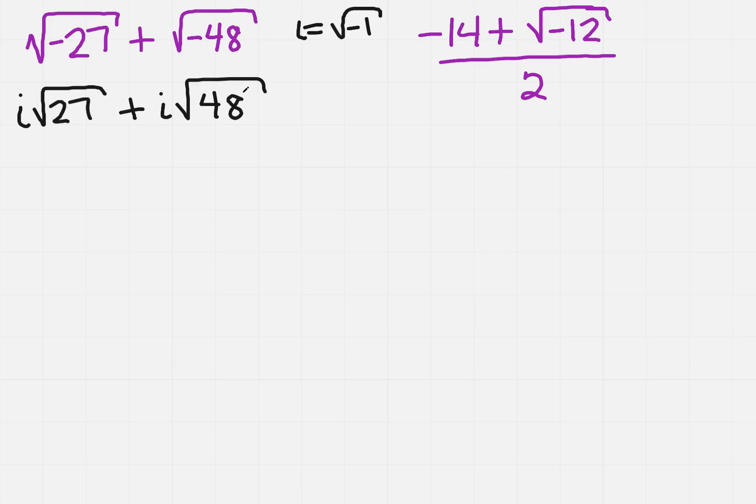When I think of 27, I know that 27 is 9 times 3. And then for 48, I really want to find a perfect square, so I know that it's going to be 16 and 3. So the square root of 9 is 3. So we've got 3i√3 plus 4i√3.